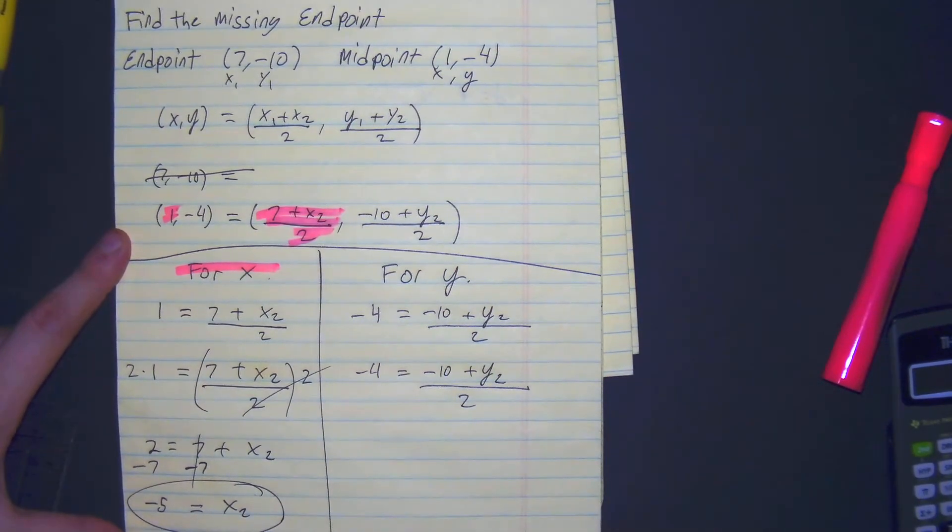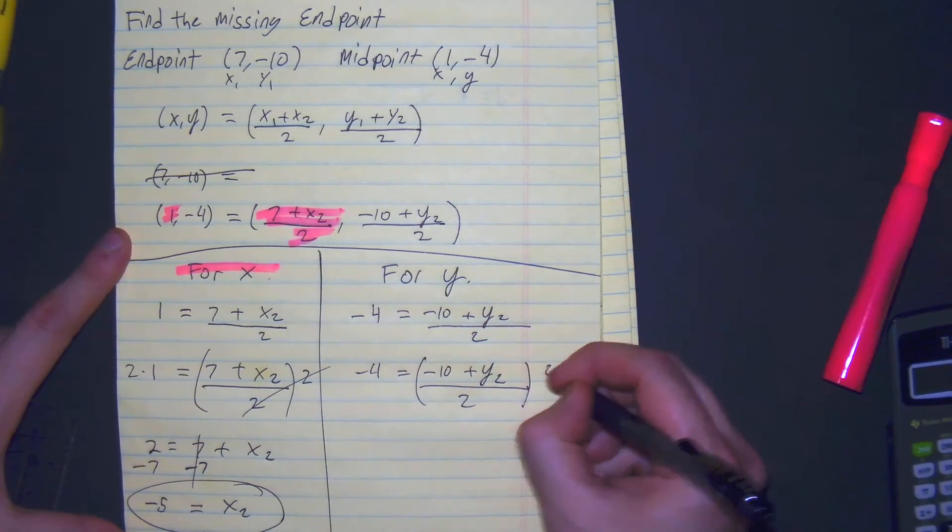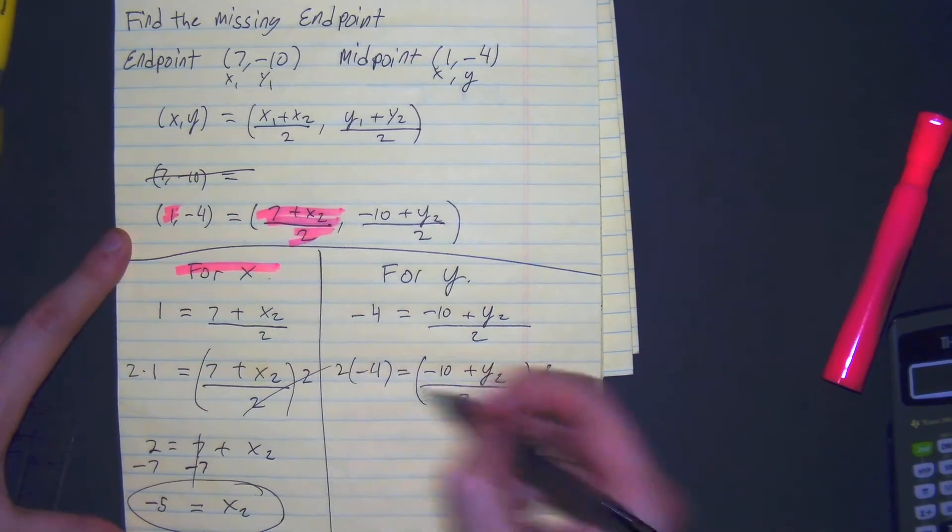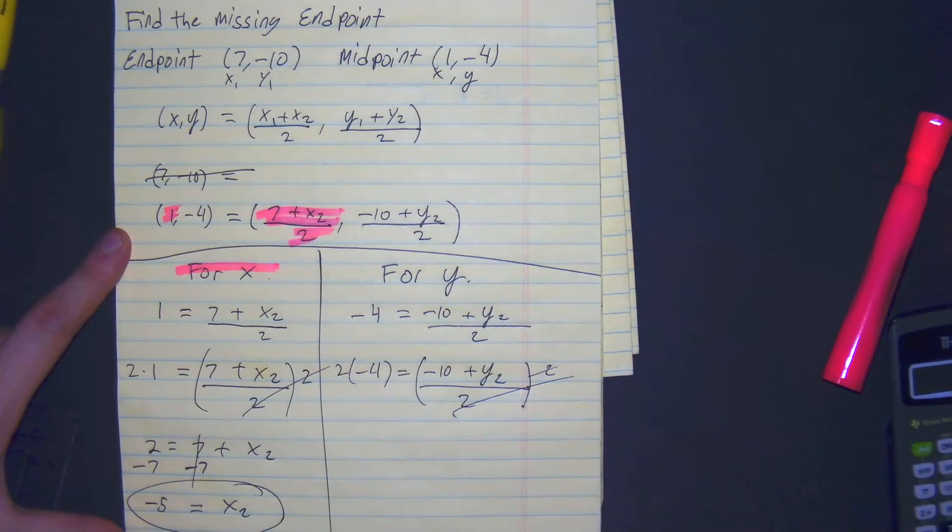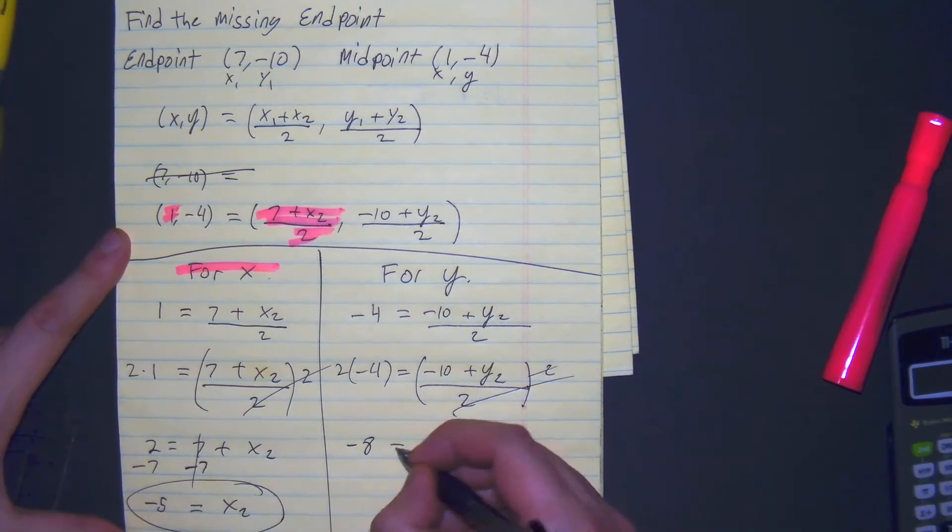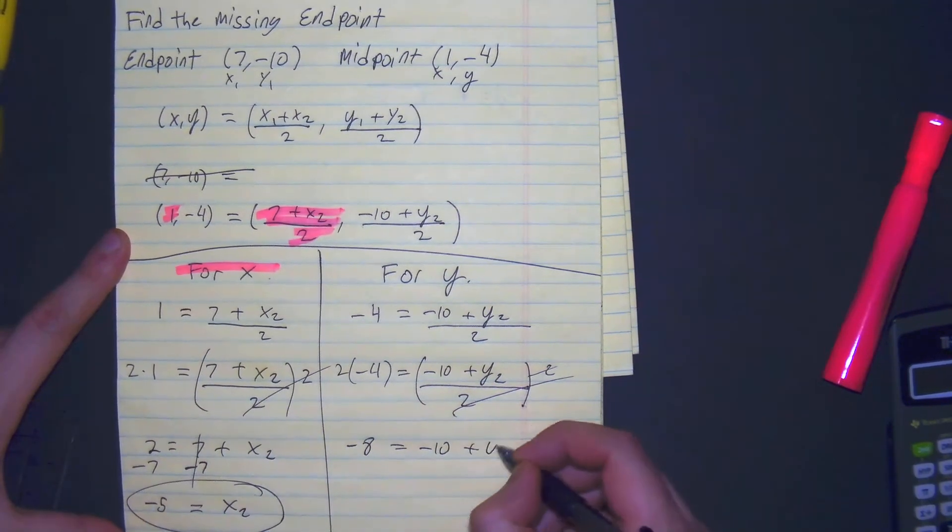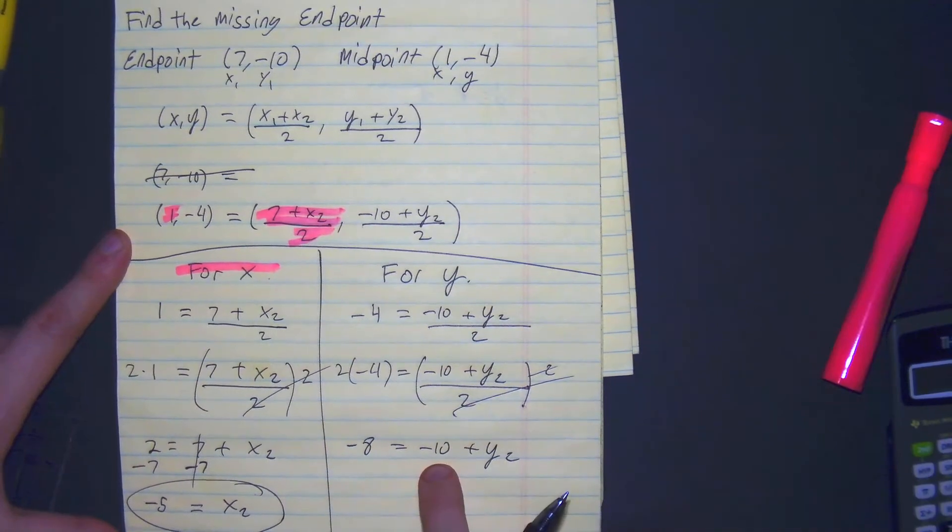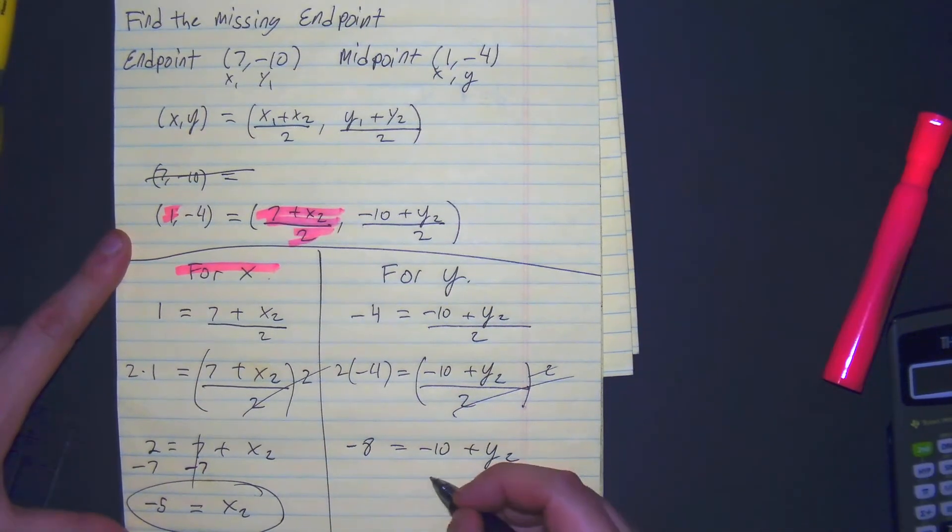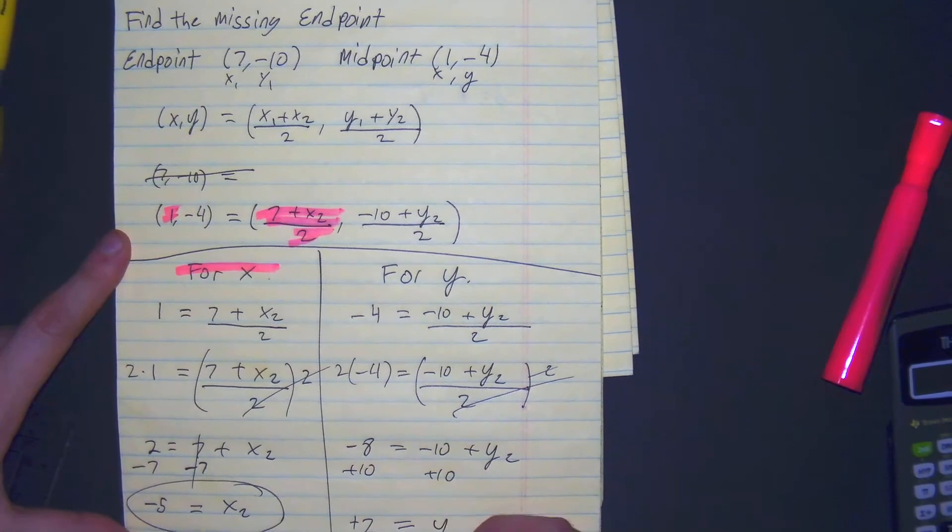From here, the inverse of division is multiplication. Cancel that out. So we get negative 8 is equal to negative 10 plus y2. Get rid of that negative 10. The inverse of subtraction is addition. Negative 8 plus 10 gives us positive 2 equals y2.